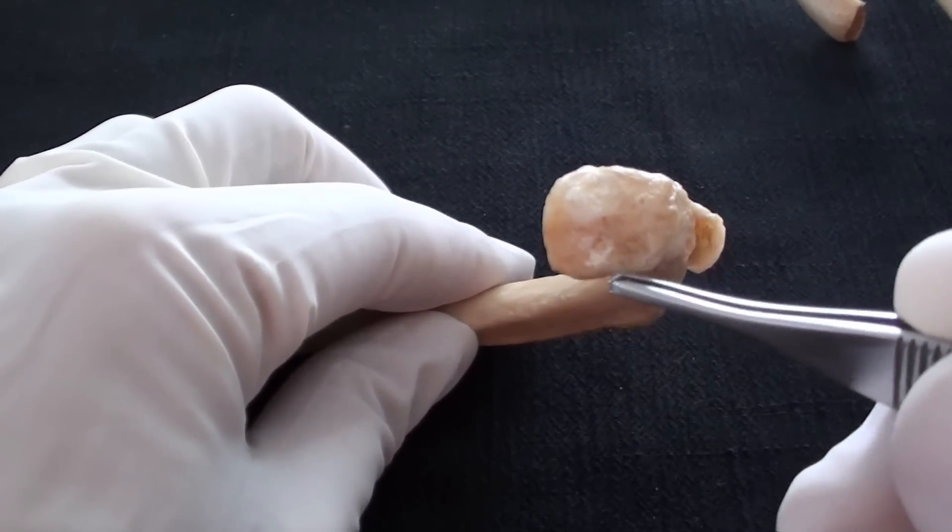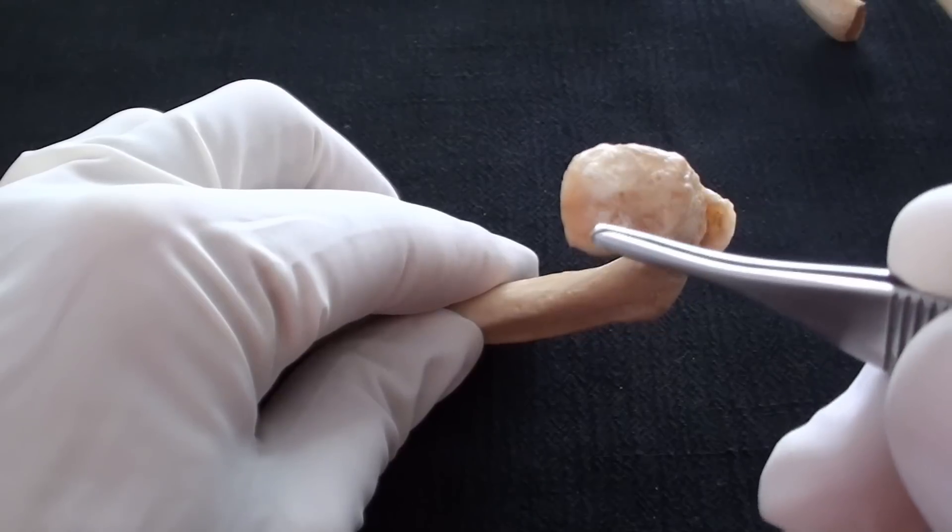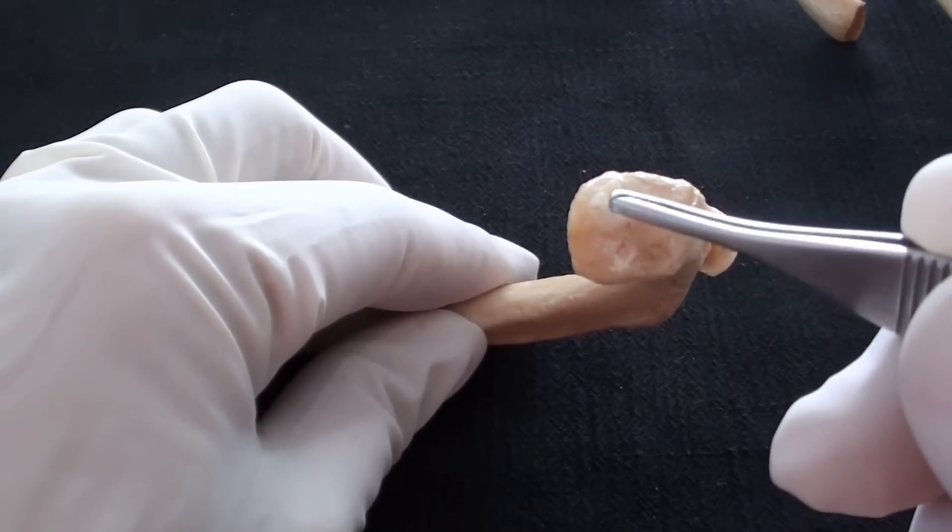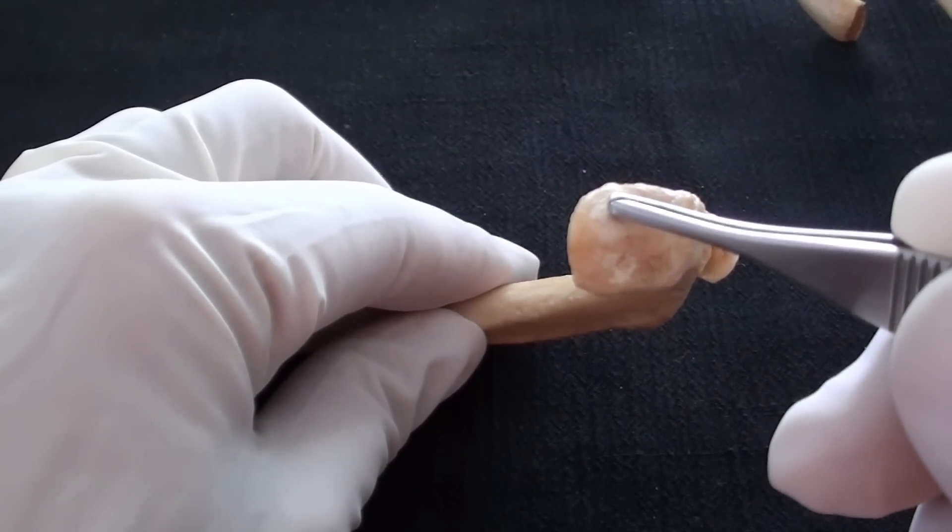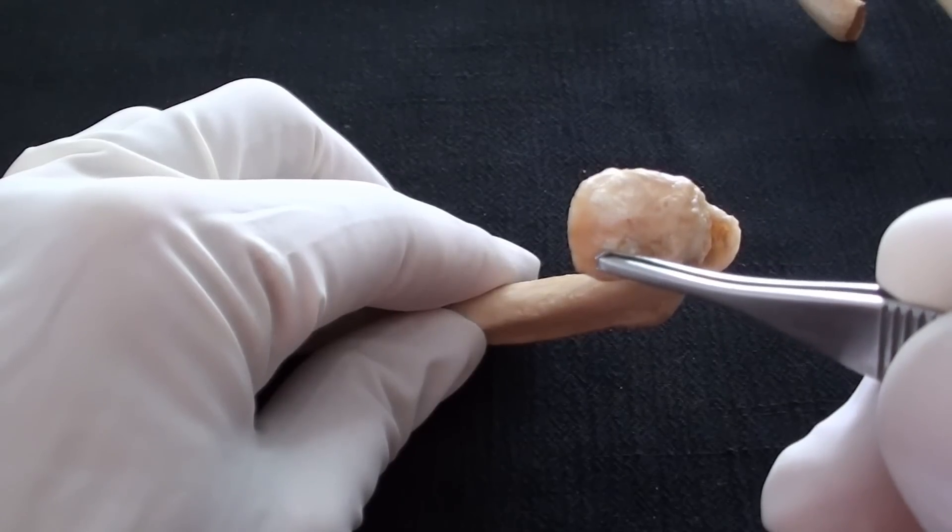on the ribs head, we are able to find two different articular surfaces. One for vertebra above, and the other one for vertebra below.